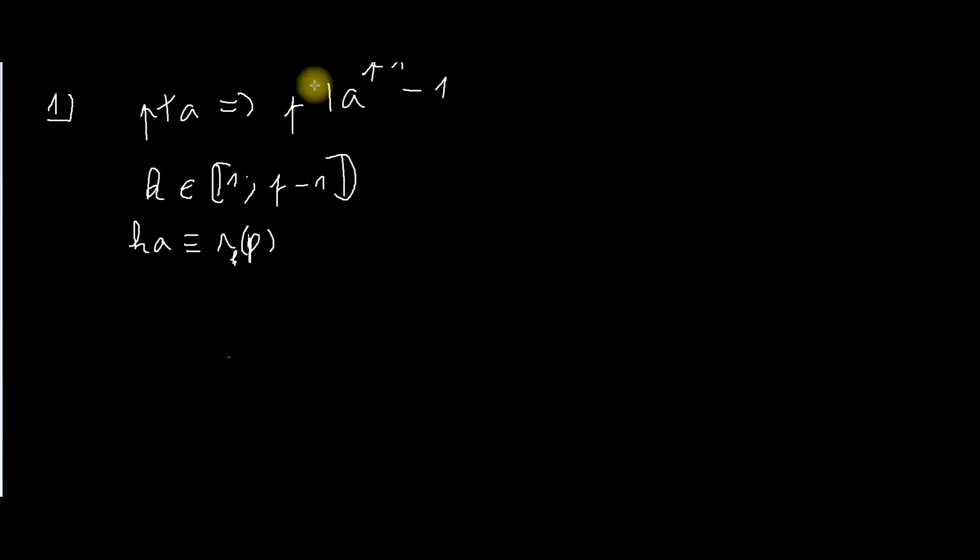Il fallait démontrer dans l'exercice sur le petit théorème de Fermat. Donc, le petit théorème de Fermat, c'est P ne divise pas A. Alors, P divise A puissance P moins 1, moins 1. Enfin, K est un entier entre 1 et P moins 1.